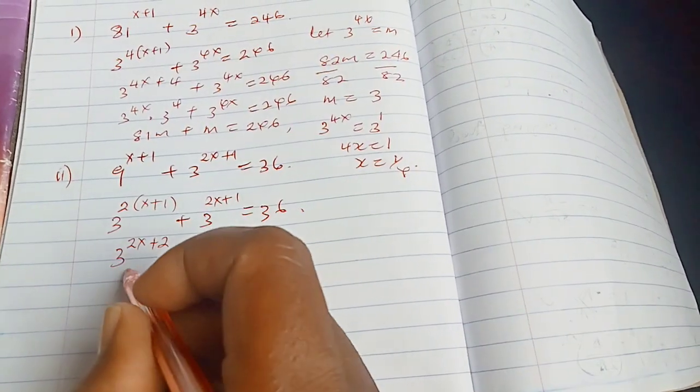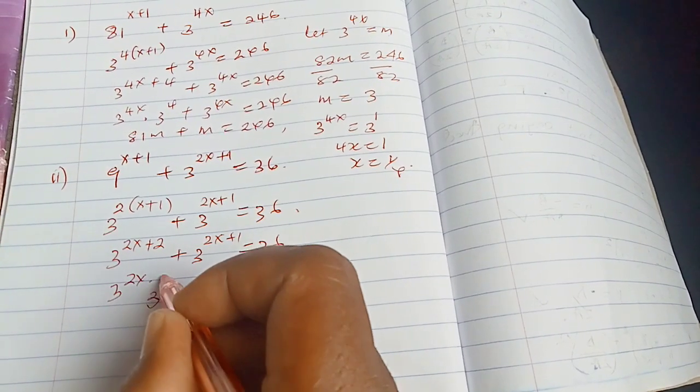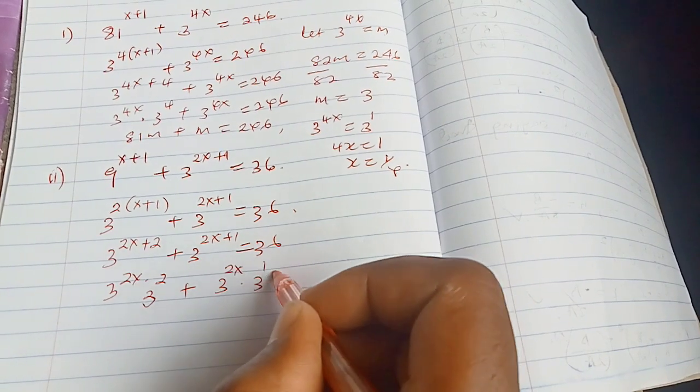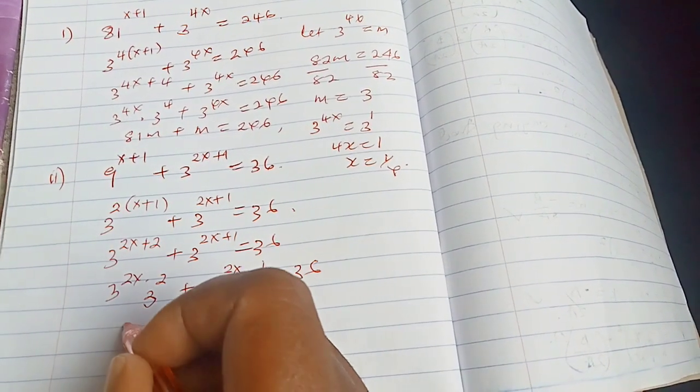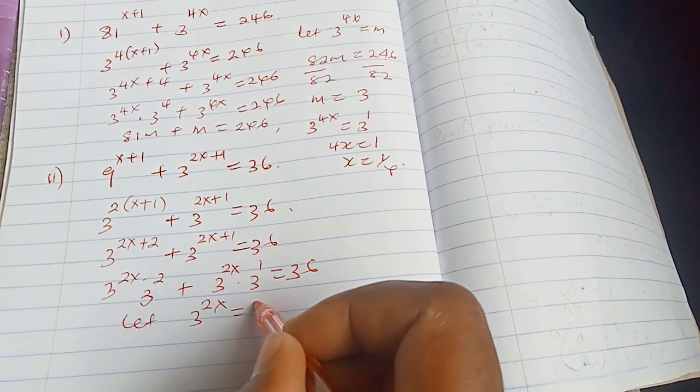Again, we dissociate this. So we have 3 to the power of 2x dot 3 to the power of 2 plus 3 to the power of 2x again dot 3 to the power of 1 equals to 36. Again, we are going to let maybe 3 to the power of 2x equals to something like k.